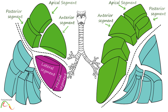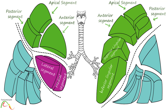The middle lobe in the right lung has two segments, called the medial segment and lateral segment. The left lung does not have a middle lobe. The lingula in the left lung, which is equivalent to the middle lobe on the right side but is essentially a part of the left upper lobe, also has two segments. These are called the superior lingular segment and inferior lingular segment.